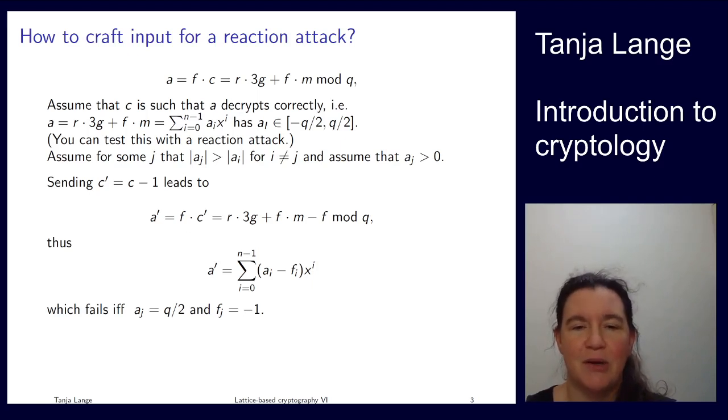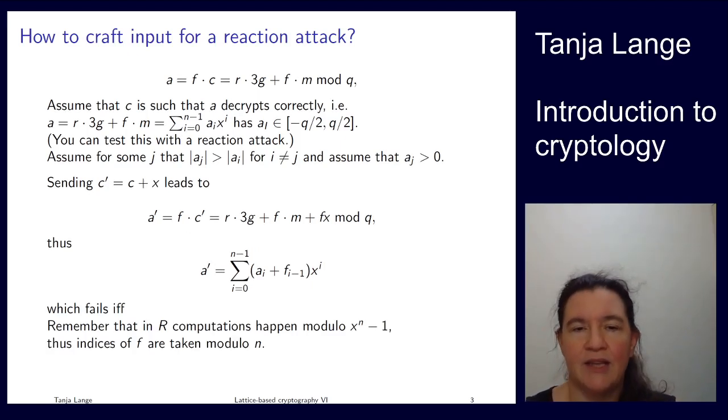It overflows at the one a_j if it was maximal and if we're actually adding one, so if f_j was minus one. Okay, so I assume that you now understand how to add, I had a one, minus one, so let's add x to it. Okay, adding x times it means we're getting an a times x here. And we should remember that we're computing in R, so we have rotation or reduction modulo x to the n minus one.